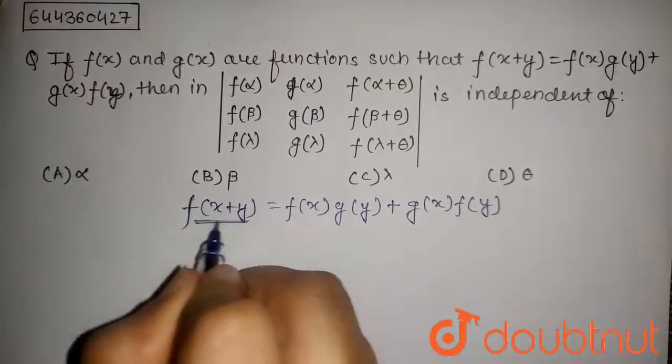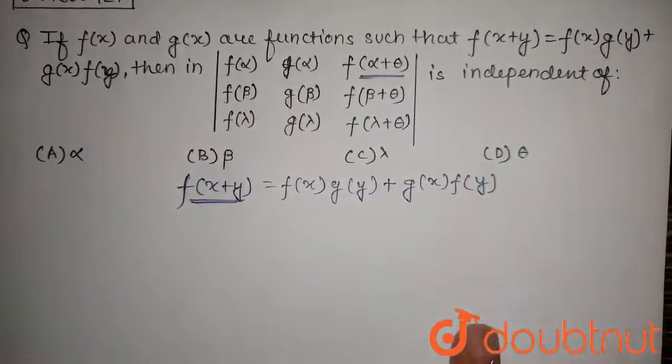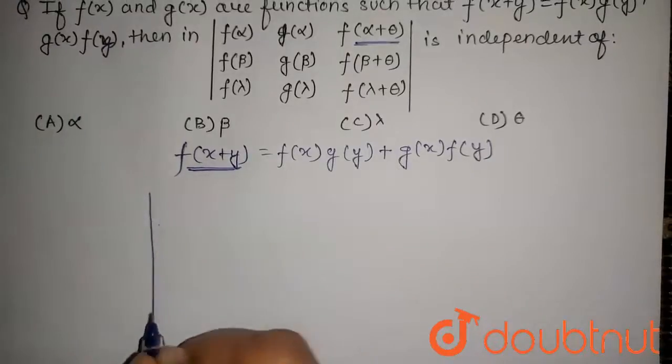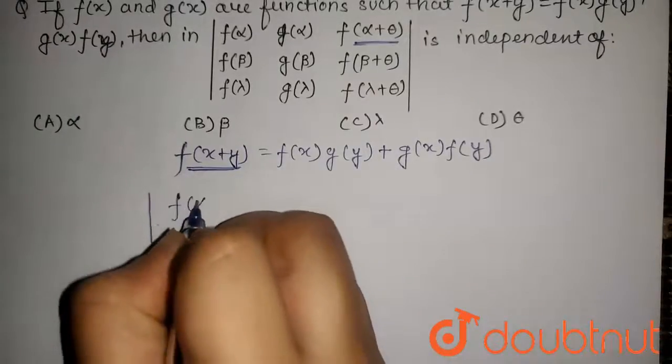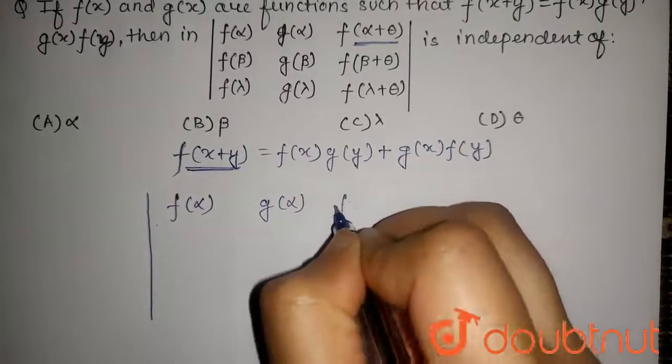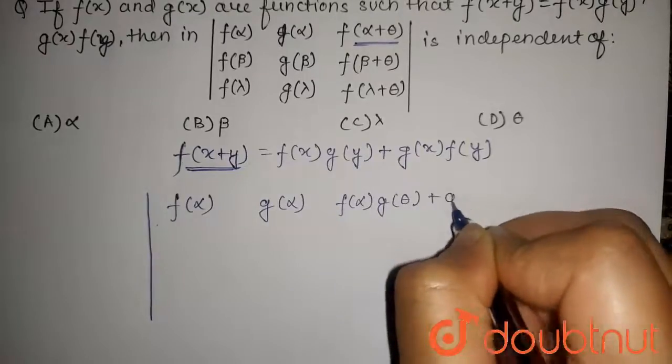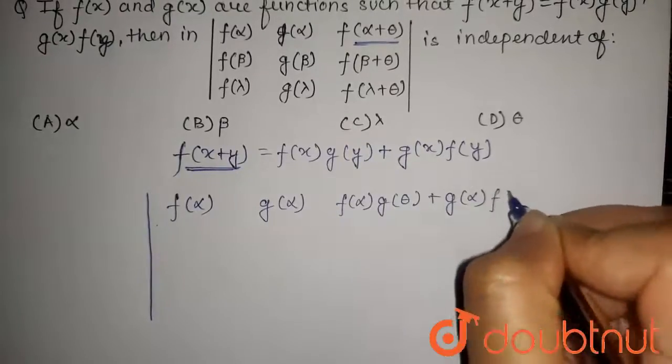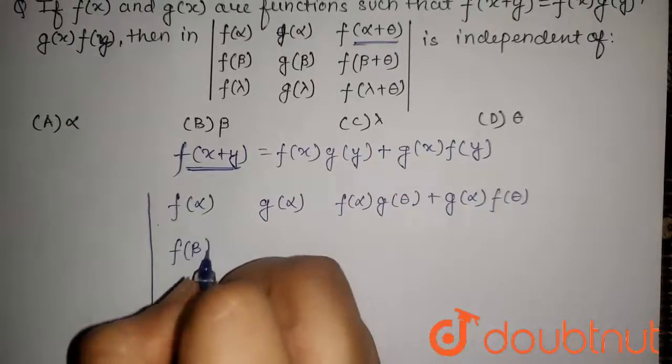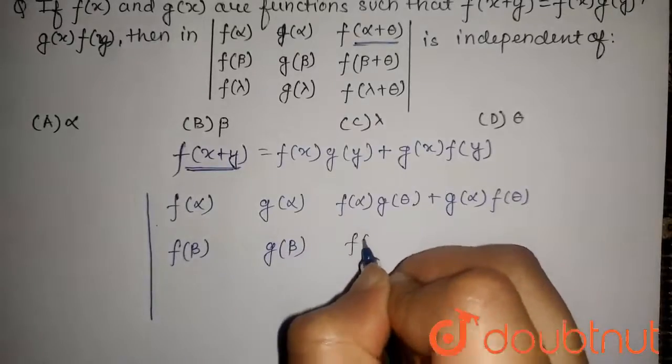So applying this function here we get: first row is f of alpha, g of alpha, and f of alpha g theta plus g of alpha f theta. The second row will be f beta, g beta, and f beta g theta plus g beta f theta.